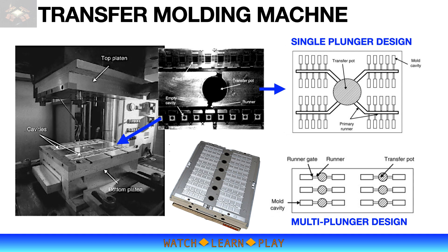Air vents are also important to prevent trapped air while the molding compound flows and fills the cavity. Air vents are typically placed at the corner of the cavity that fills last. They must be small enough to let air escape but not allow the molding compound to pass through.